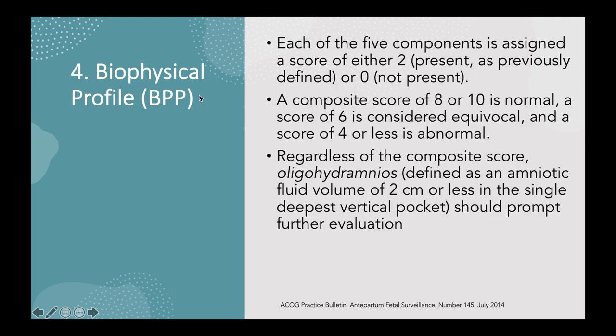A composite BPP score of 8 or 10 is normal, a score of 6 is considered equivocal, and a score of 4 or less is abnormal. Regardless of the composite score, oligohydramnios — defined as an amniotic fluid volume of 2 centimeters or less using the single deepest vertical pocket — should prompt further evaluation.